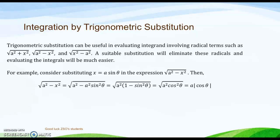For example, consider substituting x equal to a sine theta in the expression square root of a squared minus x squared. We substitute x with a sine theta and get square root of a squared minus a squared sine squared theta. Factoring out a squared, we get a squared times the quantity 1 minus sine squared theta. Using the Pythagorean identity, this becomes cos squared theta, so the result is a cos theta.